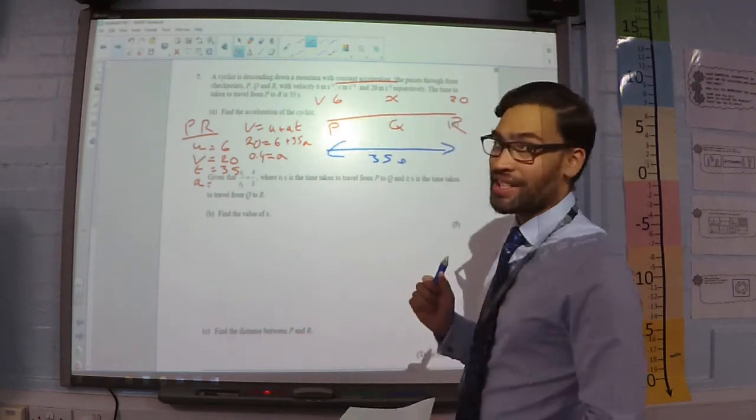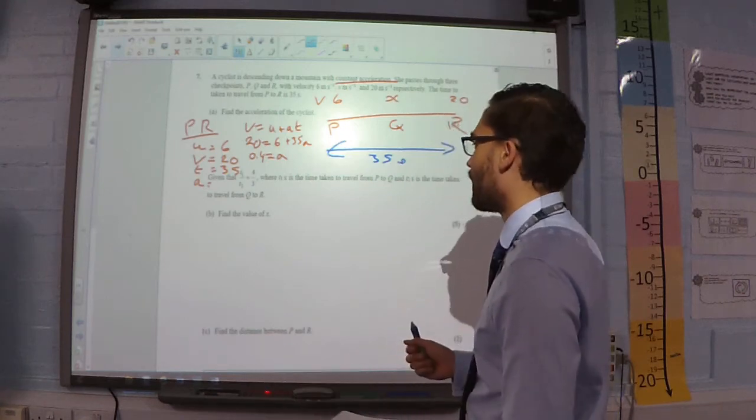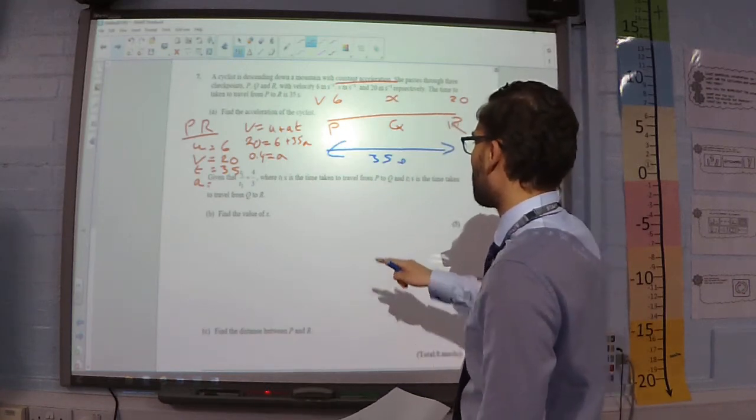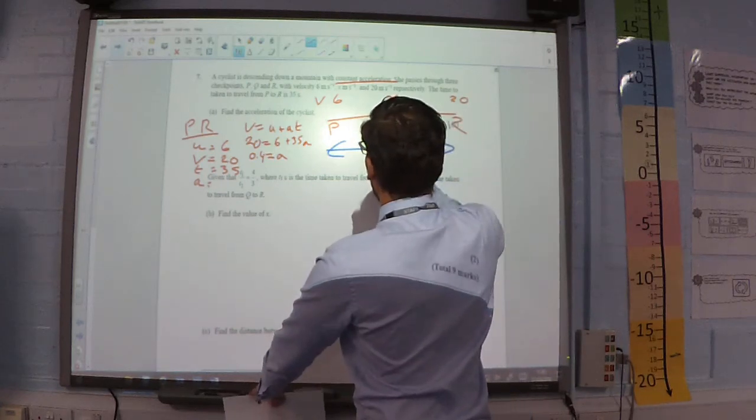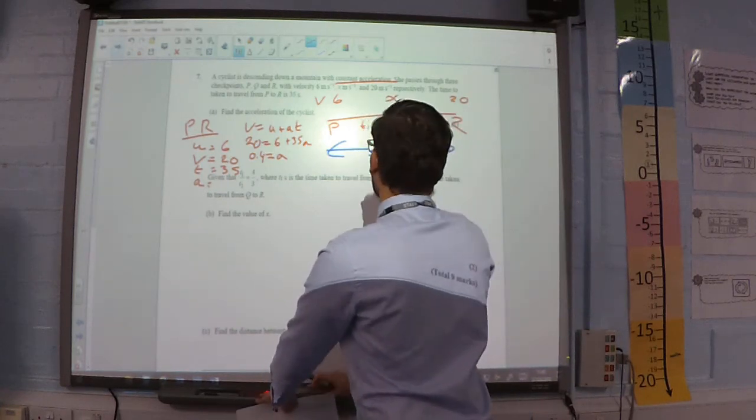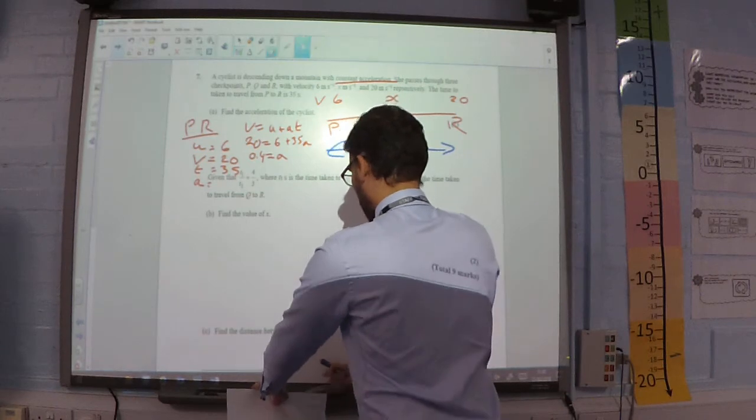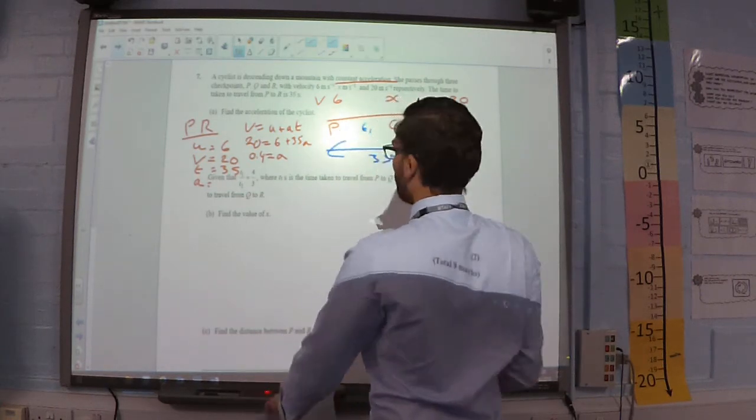Part B. Given that T1 over T2 equals 4 over 3, where T1 is the time taken from P to Q. So, we've got this as T1. That is T2.